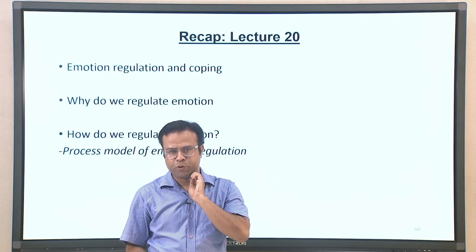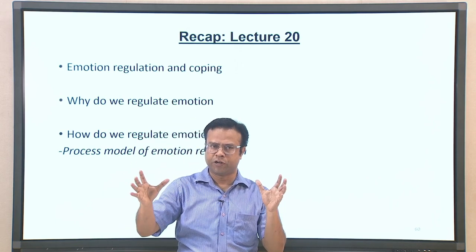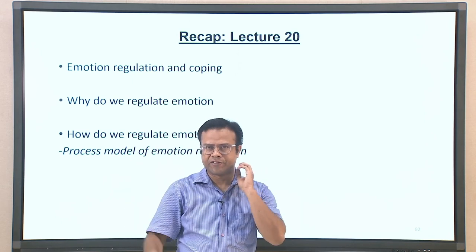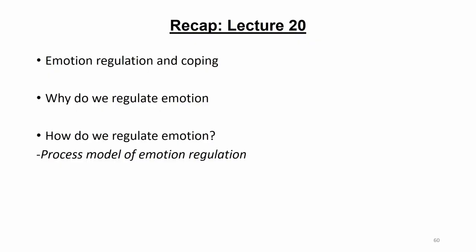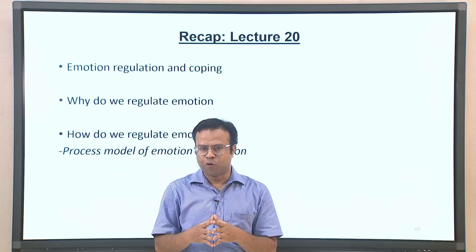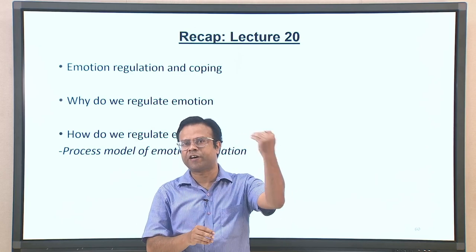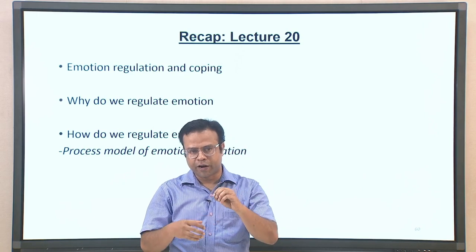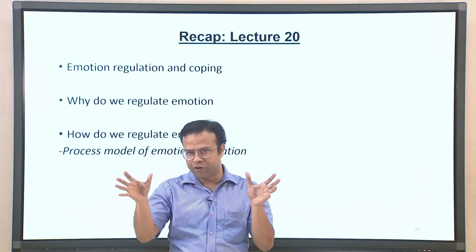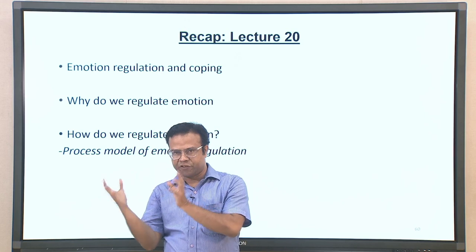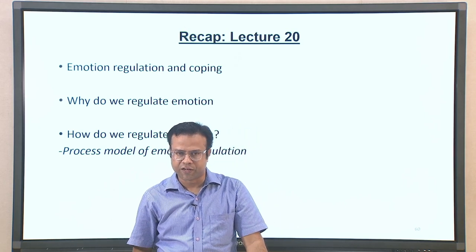Before talking about today's lecture, let me give a brief recap of the last lecture. In the last lecture, we gave an introduction to emotion regulation and coping in a general sense, where we tried to understand what emotion regulation means and how it differs from coping. Emotion regulation is a broad term covering any kind of regulation of emotion — whether intensifying or decreasing, experiencing positive or negative emotion. Coping is a more specific term referring to strategies used to reduce negative emotion.